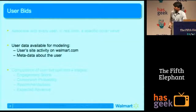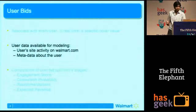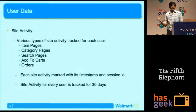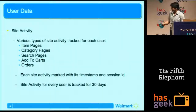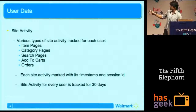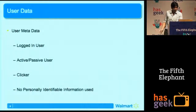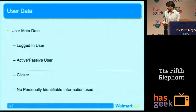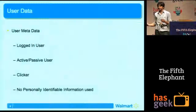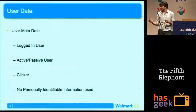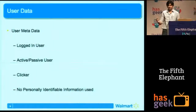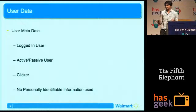What data is available for our modeling? We have first-party Walmart data: all the site activity and some metadata. Site activity includes: he's viewed this item, added to cart, ordered — all that. We keep track of everything a user does for 30 days, marked with a timestamp and session ID. We also have metadata: whether the user ever logged into Walmart.com, how frequently he visits, which helps us mark a user as active or passive. Walmart runs a variety of marketing channels, and we track whether a user has ever clicked on any ads, so we can mark him as a clicker.